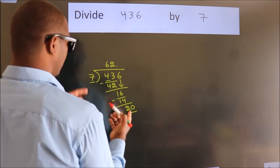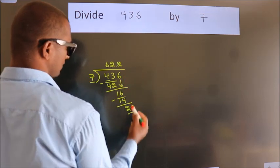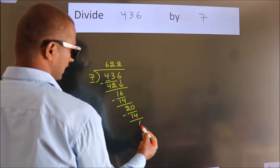A number close to 20 in 7 table is 7, 2, 14. Now, we subtract. We get 6.